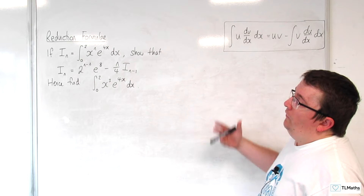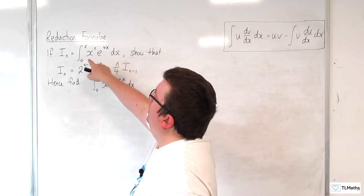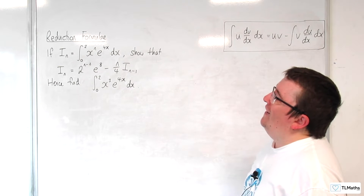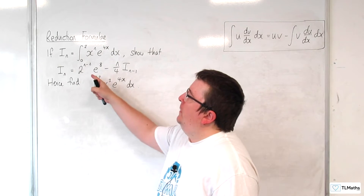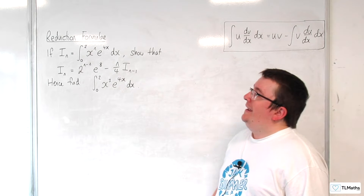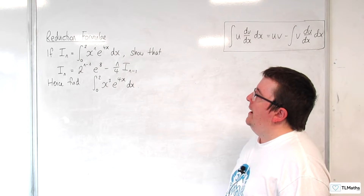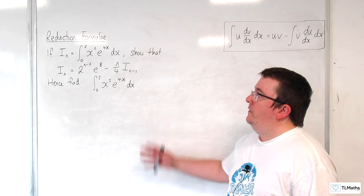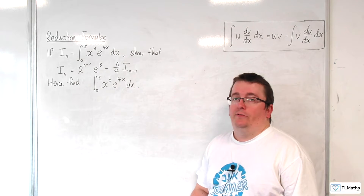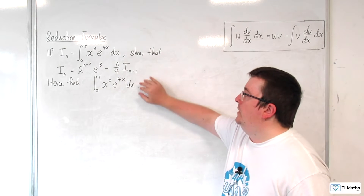In this video, if I_n is equal to the integral between 0 and 2 of x to the n times e to the 4x dx, show that the reduction formula for I_n is 2 to the n minus 2 times e to the 8, take away n over 4 times I_(n minus 1). And then hence find the integral between 0 and 2 of x cubed e to the 4x dx. Once we've shown that, we can do the second part.